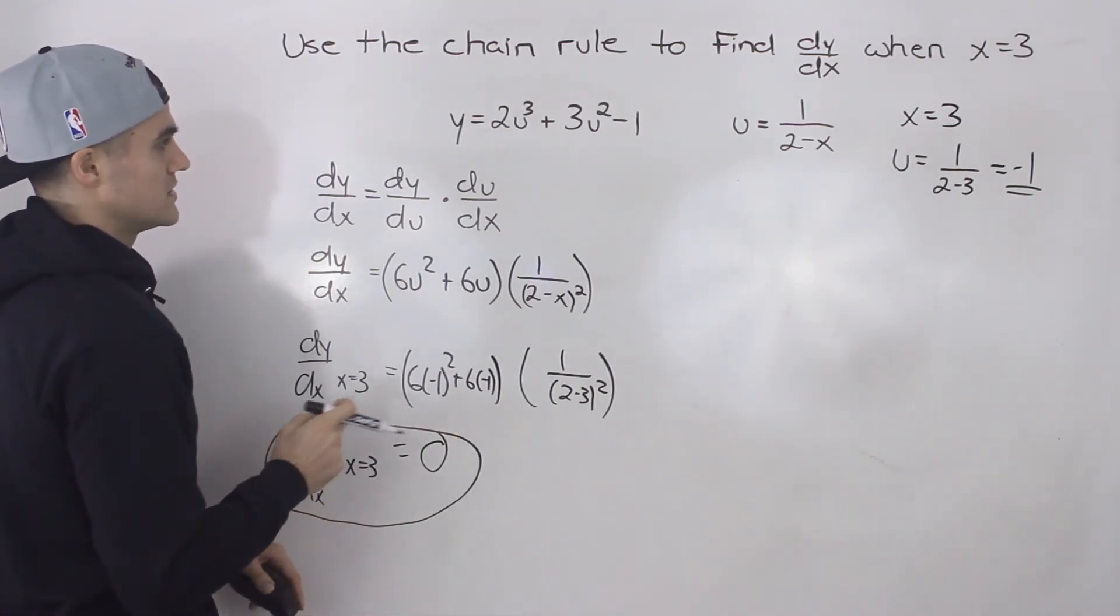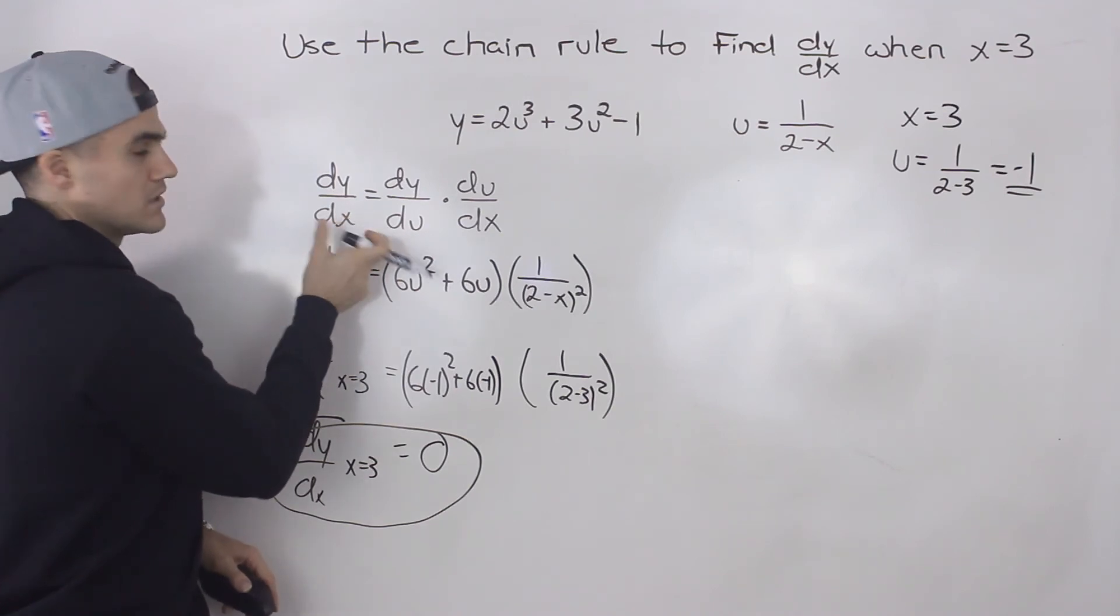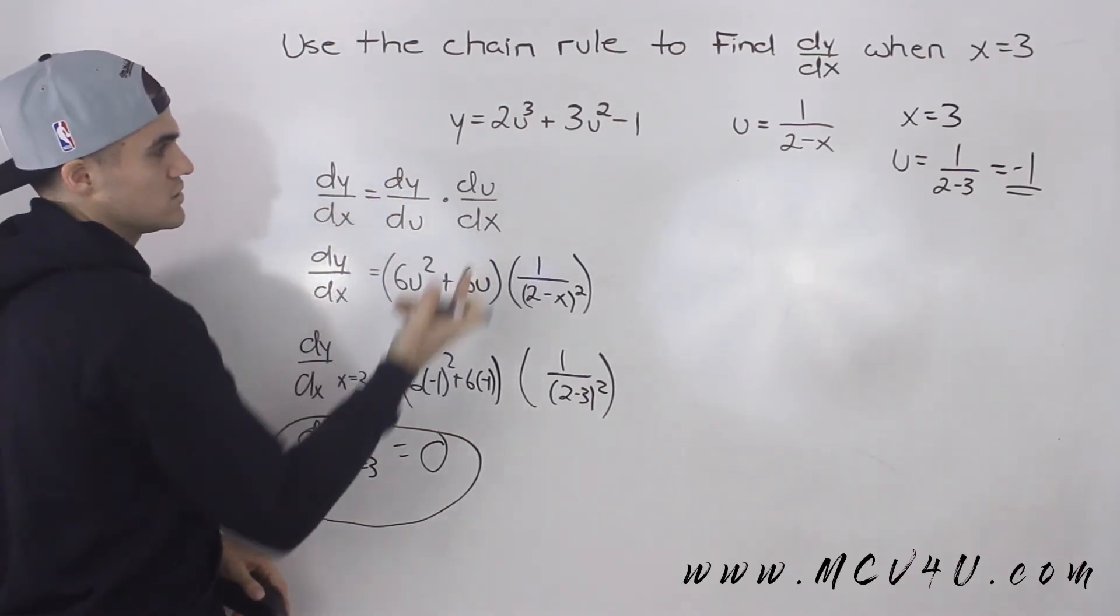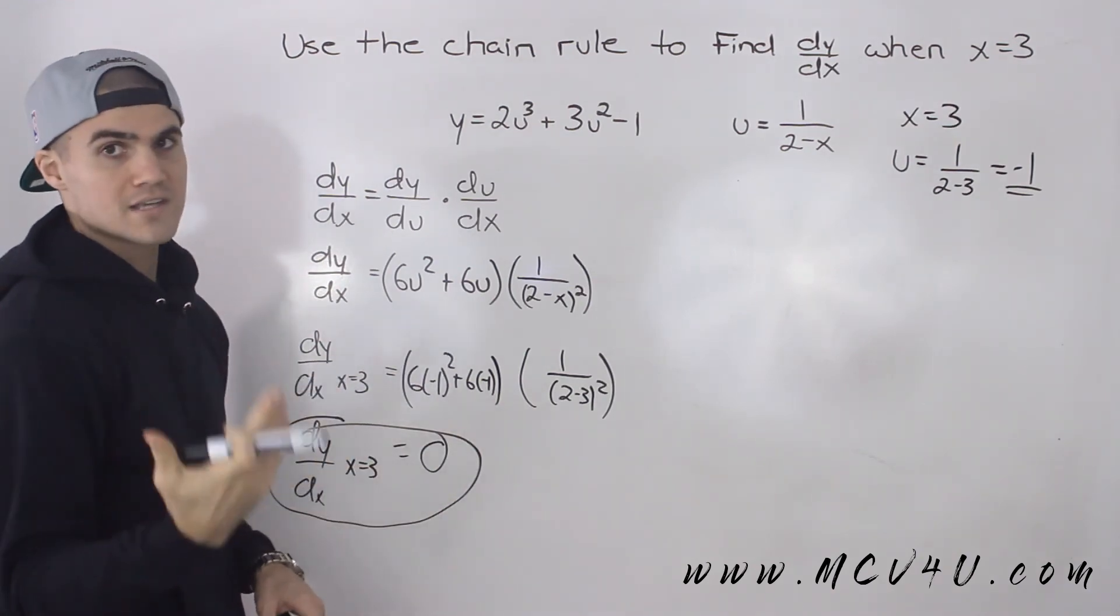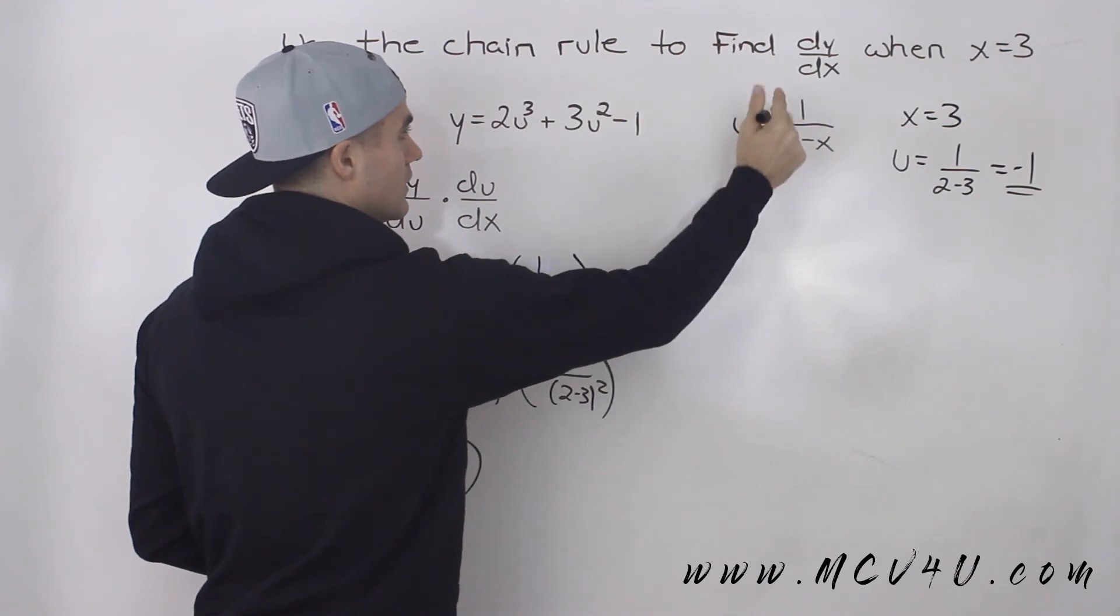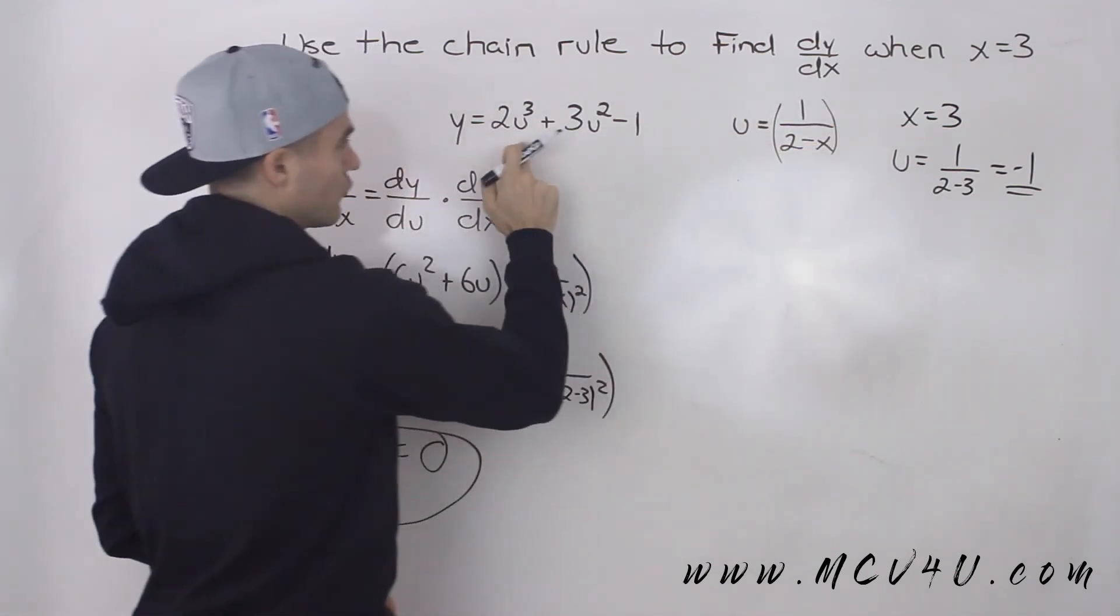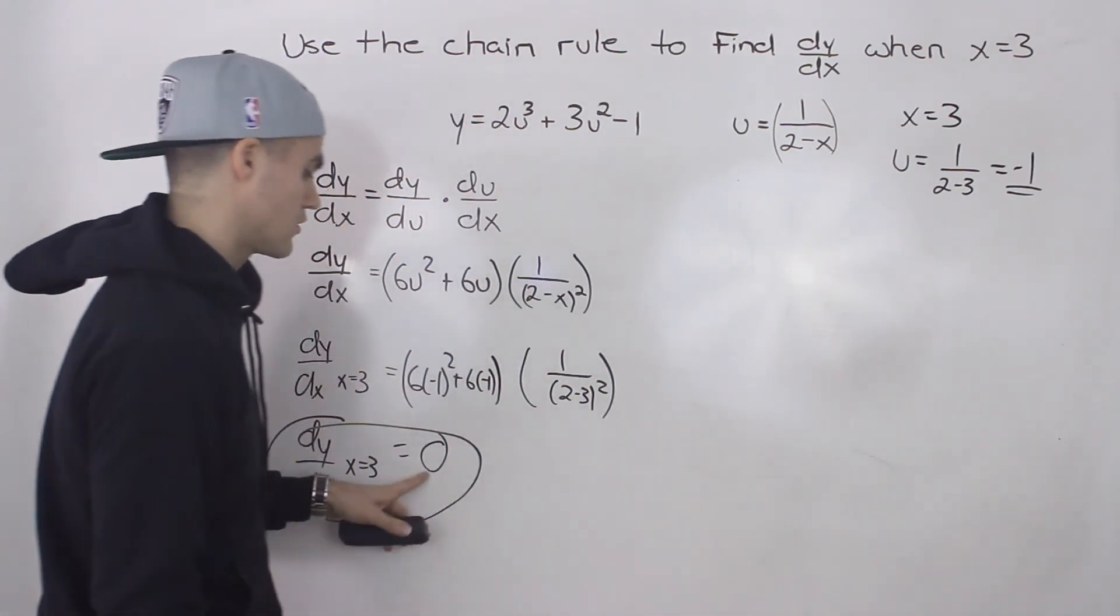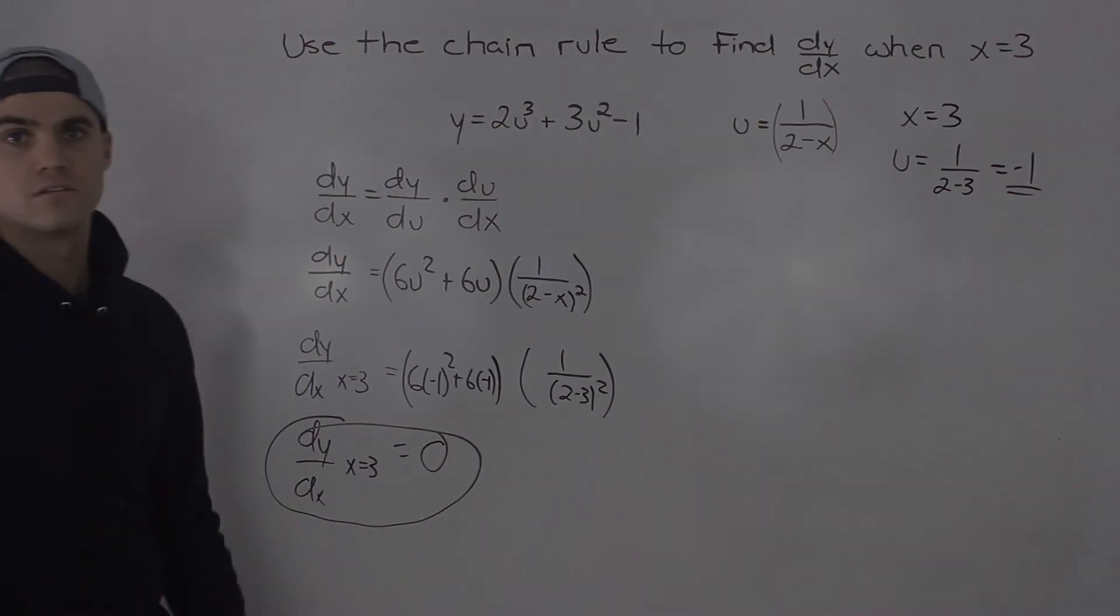So we did the chain rule in this way using Leibniz notation. So dy/dx equals dy/du times du/dx. However, as I mentioned, another way you can do it is you can take this function, this whole bracket, and plug it in for all the u's here and then just derive that, plug in x value of 3 at the end, and you should still get the same answer, 0.